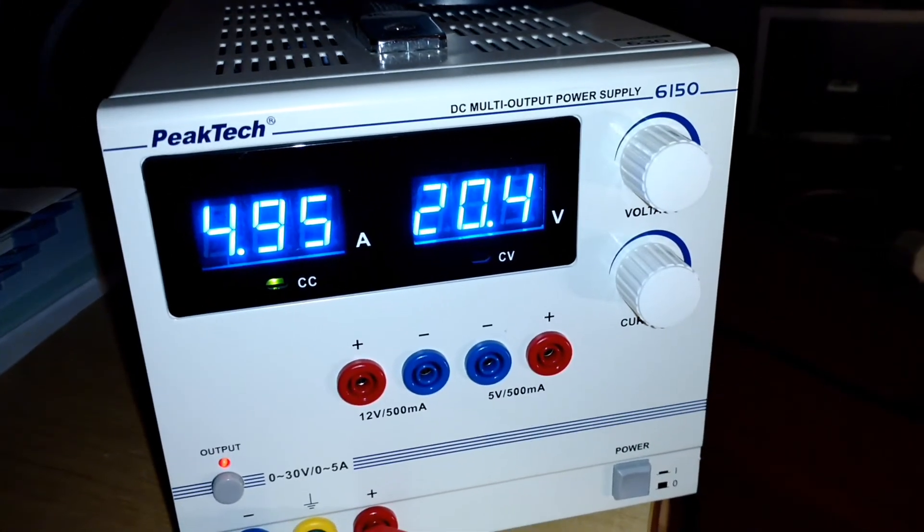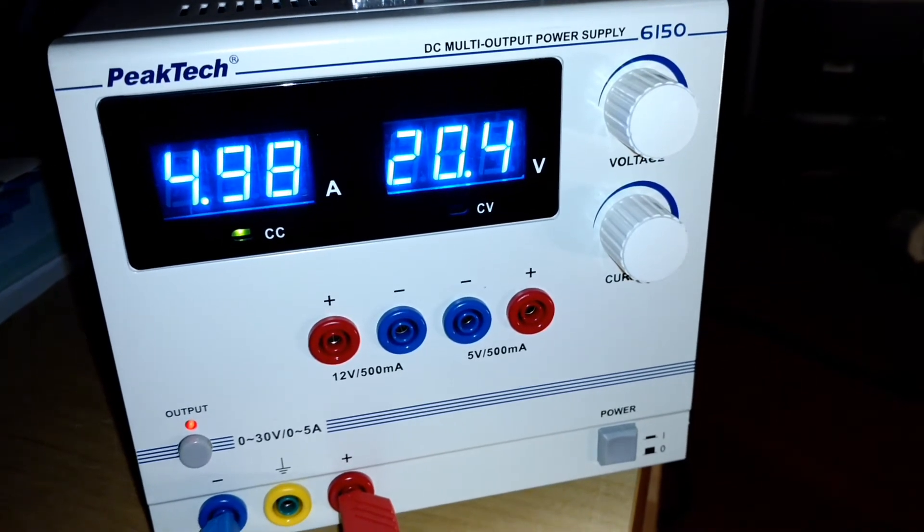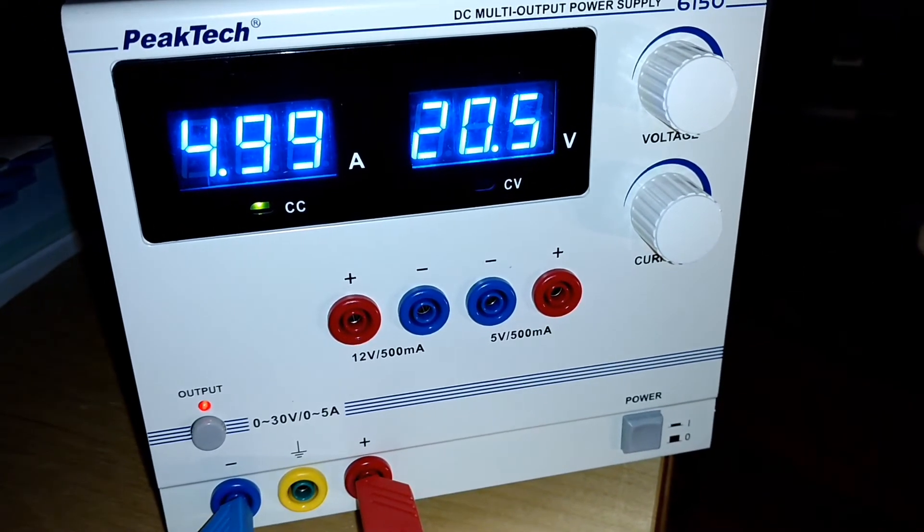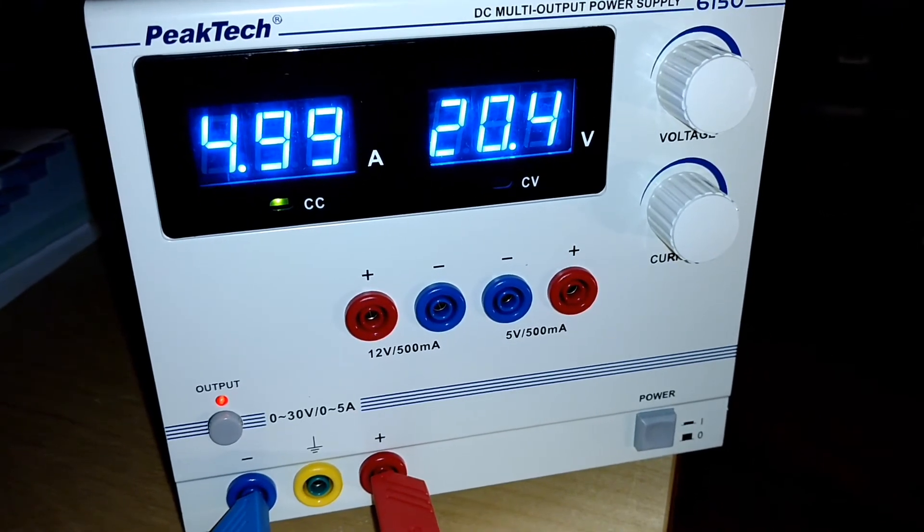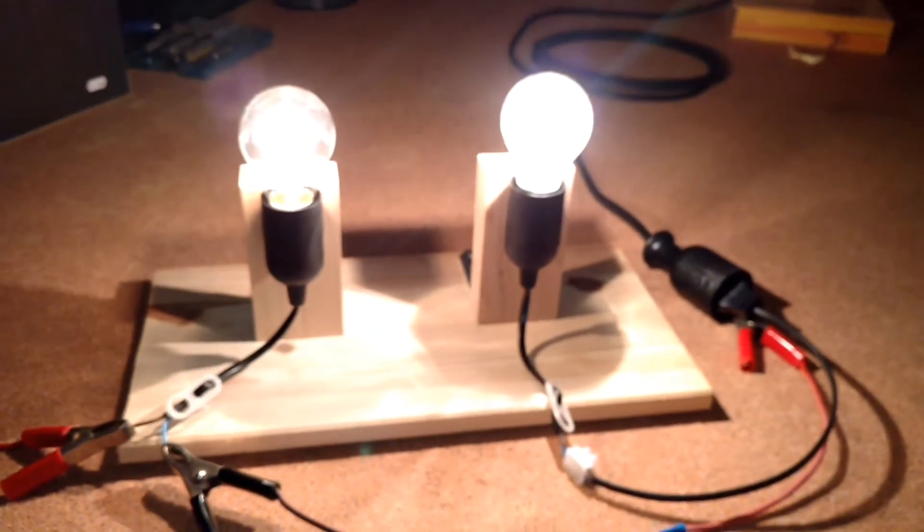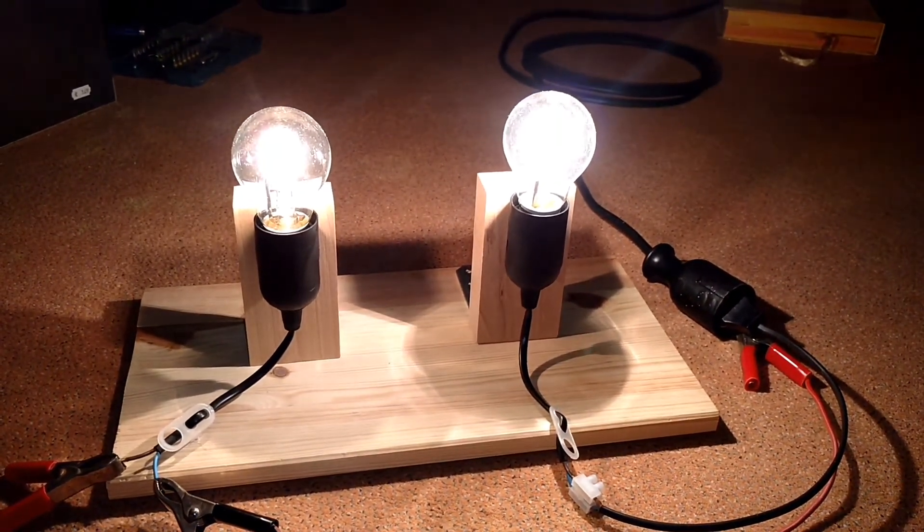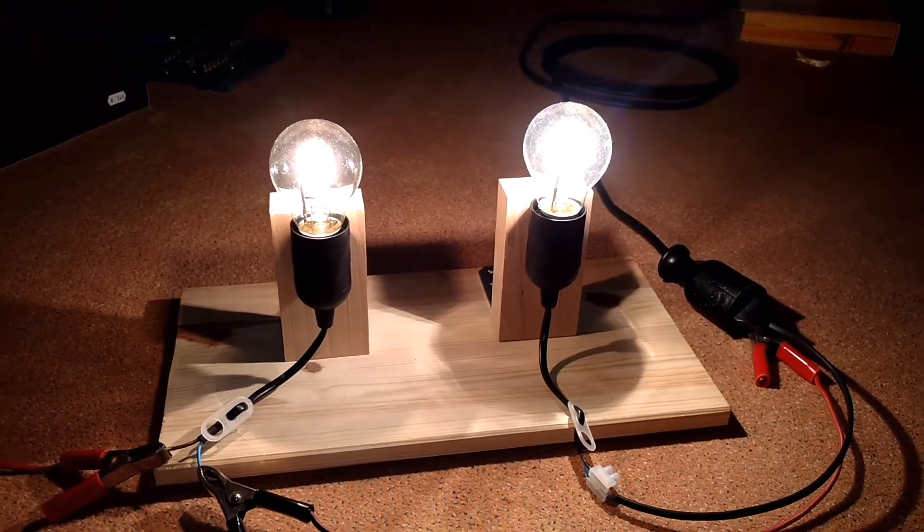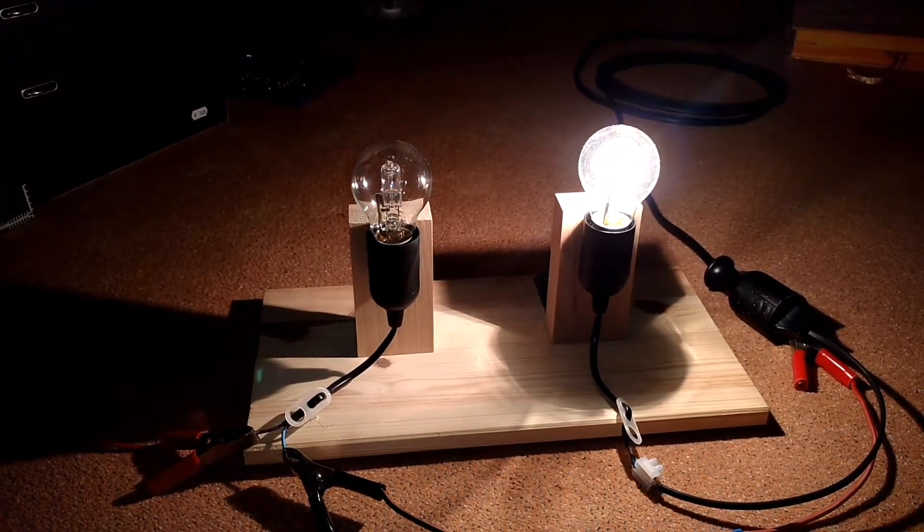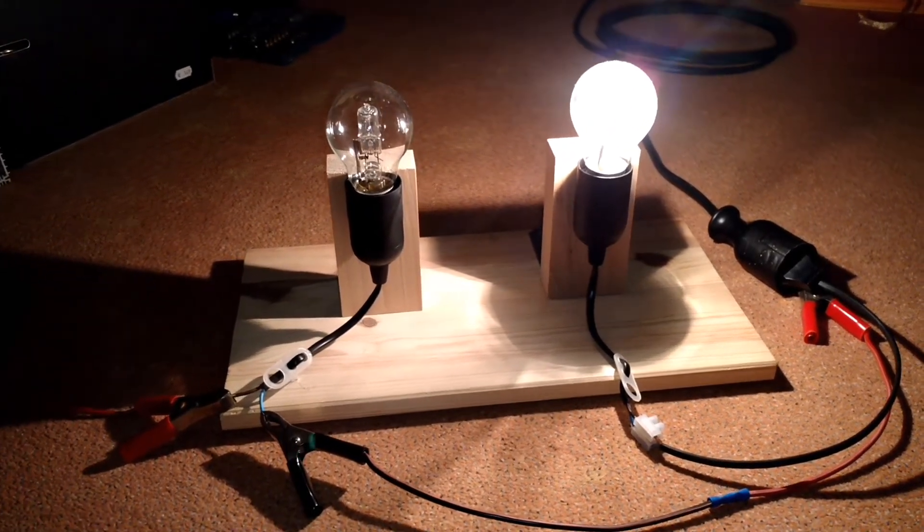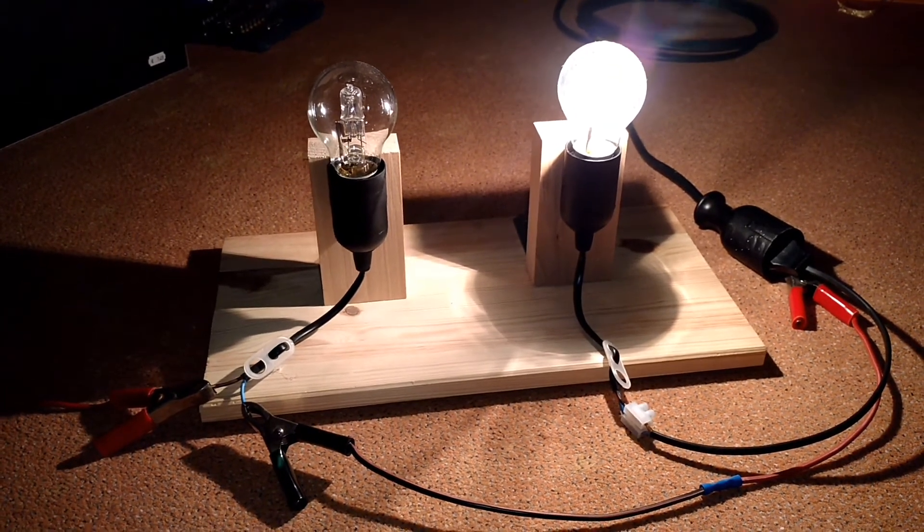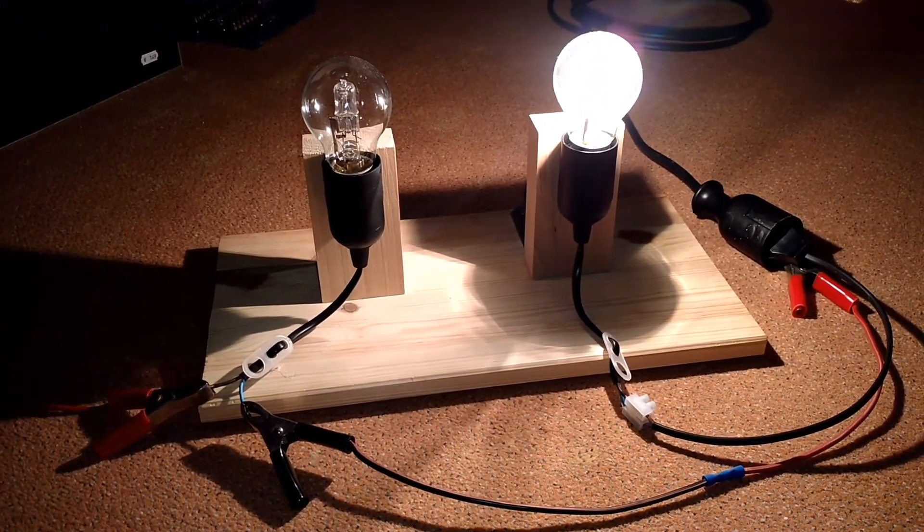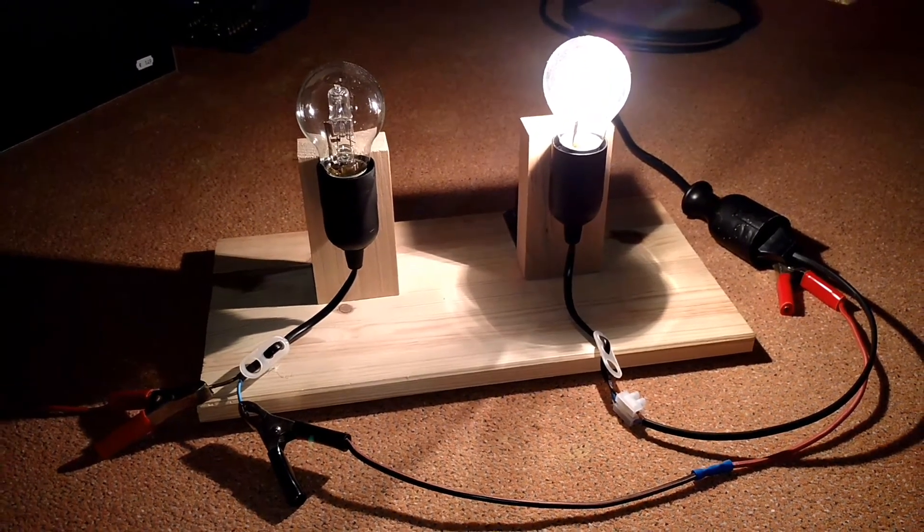With this receiver I can power the slayer exciter until 20.4 volt and with the current of 4.05 amps, but as you can see I cannot get the same brightness as the reference light bulb. I think my previous test with the other receiver was better than this one.